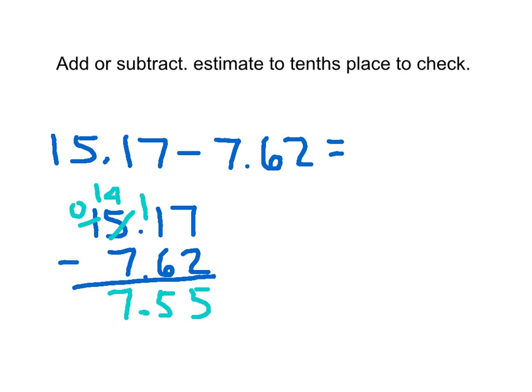My estimate to check it says estimate to the tenths place. So 15.17, the 1 is in the tenths place. I'm rounding 15.17 to the tenths place. Since the 7 right here means that the 1 has to go up, it goes up to a tenths place number to 2. I don't write the 0 because it's a tenths place number after the decimal point. I won't write that in, but I will write in the other digits, so it's 15.2.